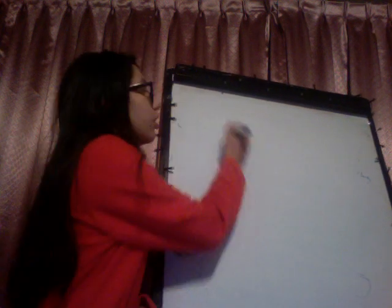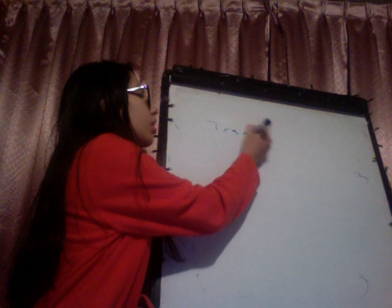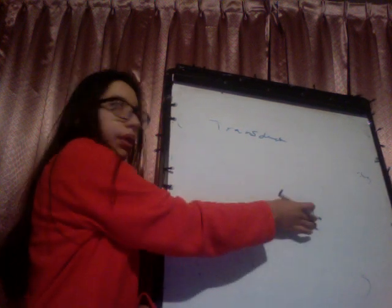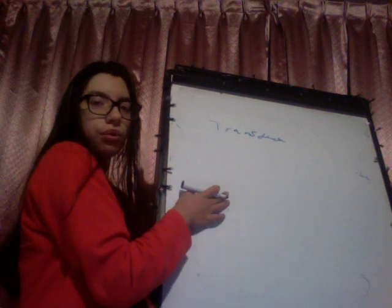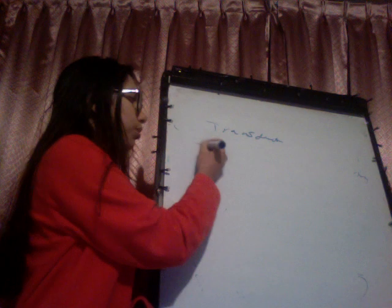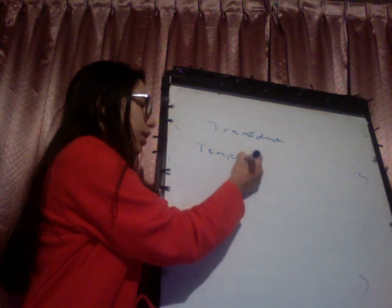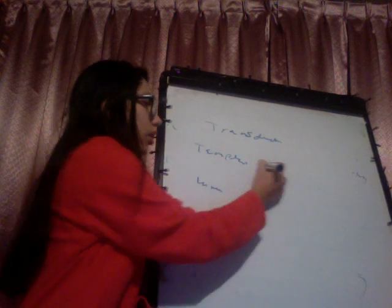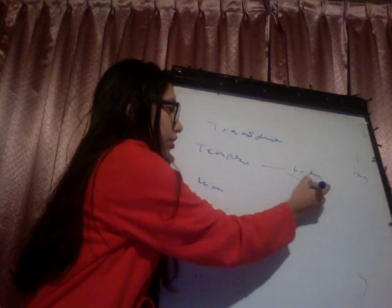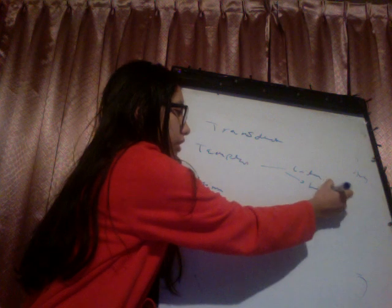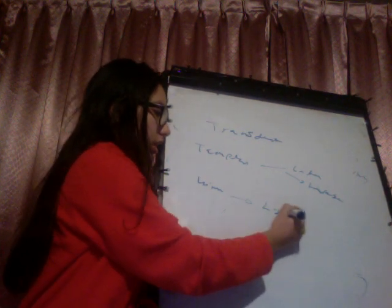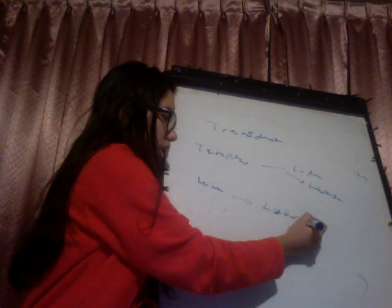We are going to see the transduction, the transfer of genetic material from one bacteria to another. To understand this, we are going to first talk about the cycle of the bacteriophage. We have two kinds of bacteriophage: temperate and virulent. The temperate can replicate in the lytic or lysogenic cycles, and the virulent only in the lytic cycle.